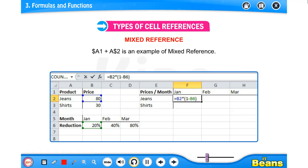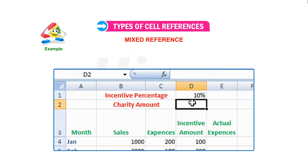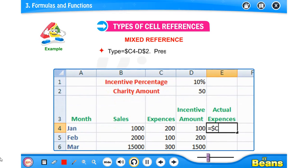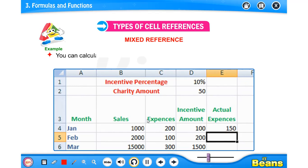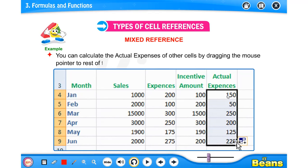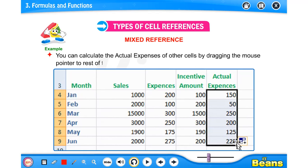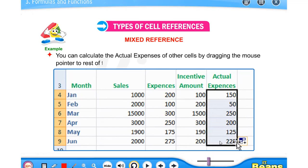Here is an example of mixed reference: to calculate actual monthly expenses, type 50 in cell D2. Click on cell E4 and type =$C4-D$2, then press Enter. You can calculate the actual expenses of other cells by dragging the mouse pointer to the rest of the cells. Write the formula in the first cell and drag using the fill handle — that small plus sign at the bottom right corner of the cell — to apply the formula automatically to other cells.